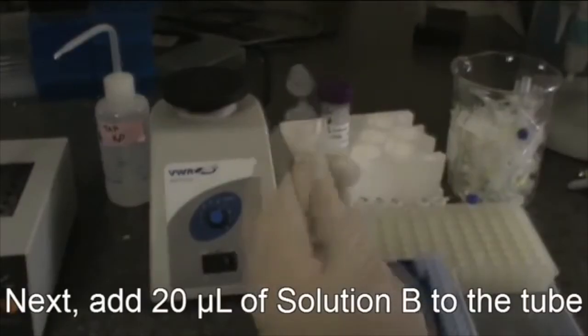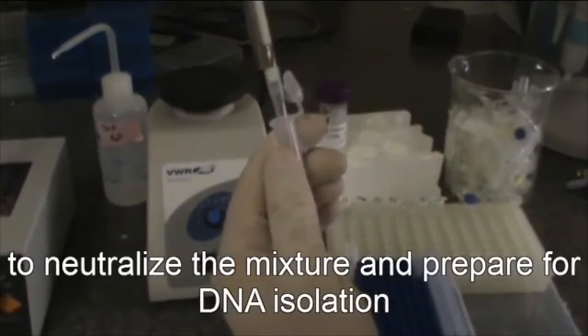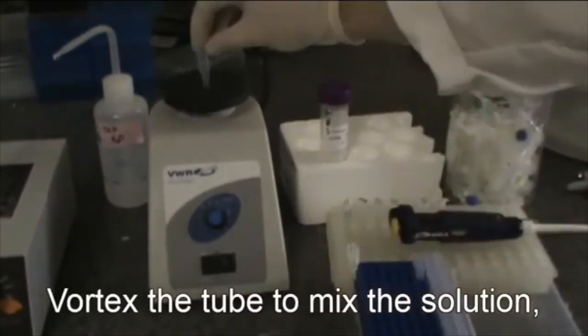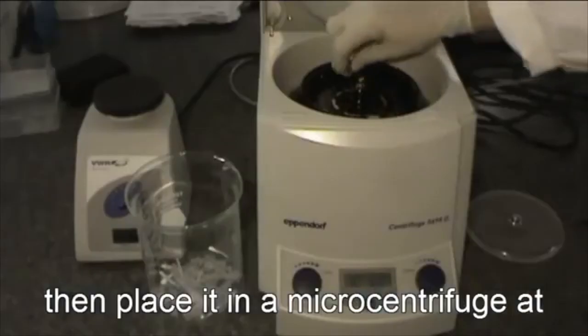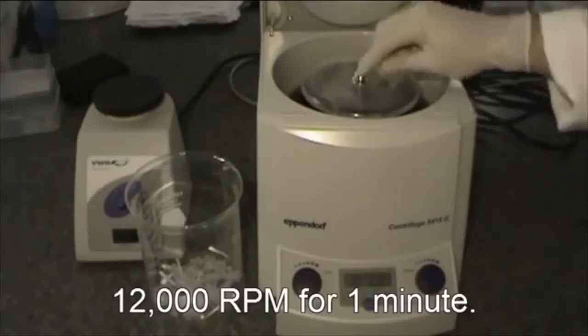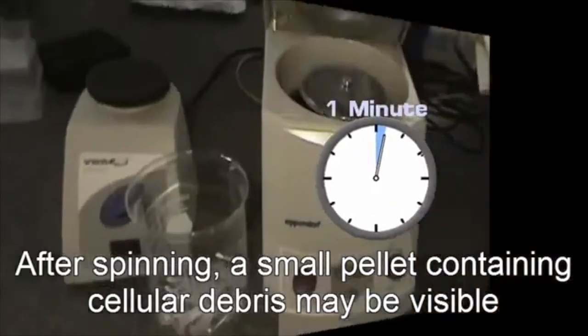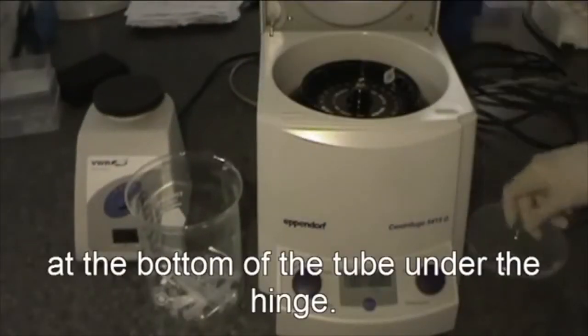Next, add 20 microliters of solution B to the tube to neutralize the mixture and prepare for DNA isolation. Vortex the tube to mix the solution. Then place it in a microcentrifuge at 12,000 RPMs for 1 minute. After spinning, a small pellet containing cellular debris may be visible at the bottom of the tube under the hinge.